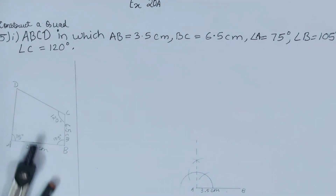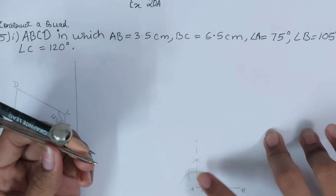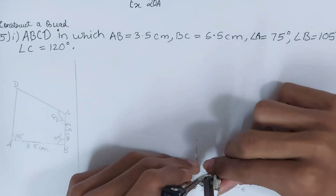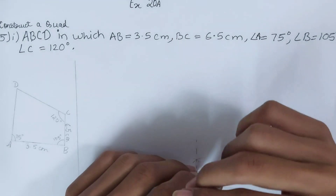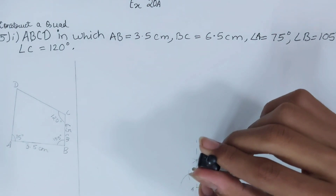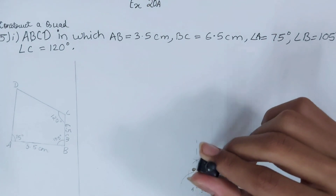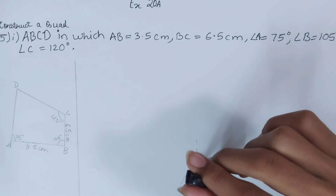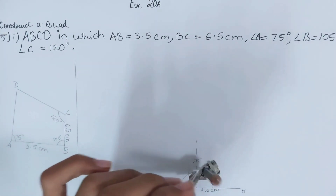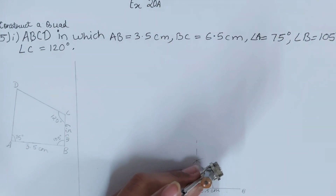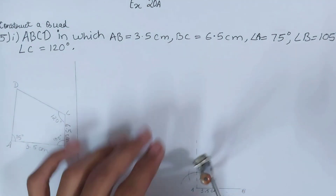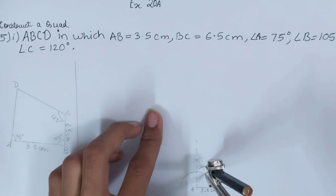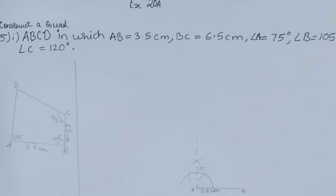To get 75°, we bisect the angle between 60° and 90°. Keep the compass at the 90° point and open it to more than half the arc between 60° and 90°. Make sure you change the radius this time. Cut an arc, then cut another arc from the 60° point. The intersection formed is your 75° point.